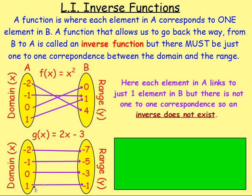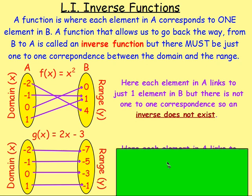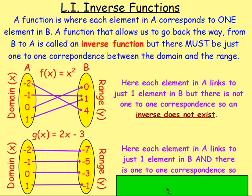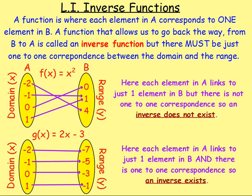Zero links to negative three and then one to negative one. So that's fine — every element in A links across to just one element in B. And also going back the way, every single element in B links to just one value in A. So you could say for that one there is one-to-one correspondence, so an inverse would exist.